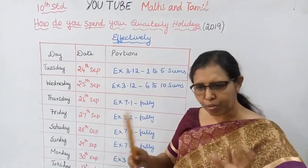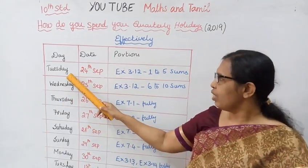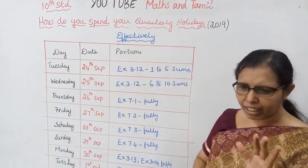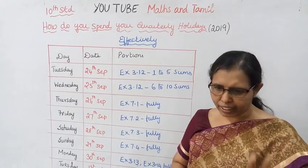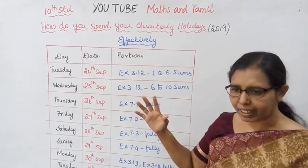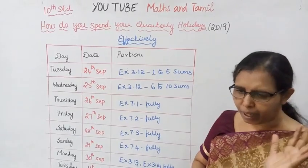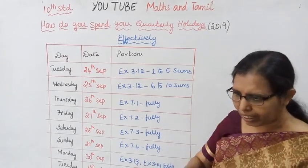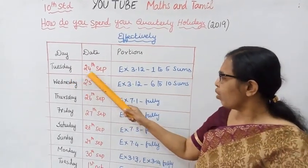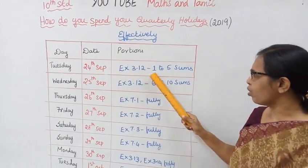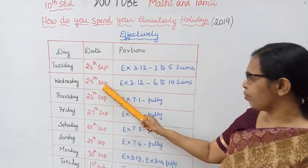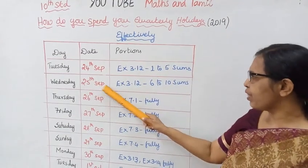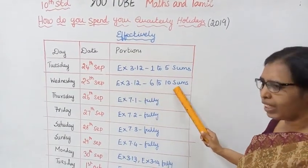On the 23rd, quarterly exam is coming. Tuesday 24th September: Exercise 3.1, sums 1 to 5, max level. You can get quarterly exam prep with Exercise 3.1, problems 1 to 5 — 10 problems to practice. Wednesday 25th September: Exercise 3.1, sums 1 to 5, then Exercise 3.1, sums 6 to 10.